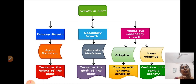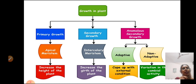The growth in the plant is either primary growth, secondary growth, or anomalous secondary growth. Primary growth is caused by the apical meristem and results in the increase in the height of the plant. Whereas secondary growth is due to the intercalary meristem, which is responsible for the increase in the girth or thickness of the plant. The anomalous secondary growth, which is the abnormal secondary growth, is of two types: one is adoptive and the other is non-adoptive. Adoptive is adopted because of external conditions, while non-adoptive is due to variation in the cambial activity.